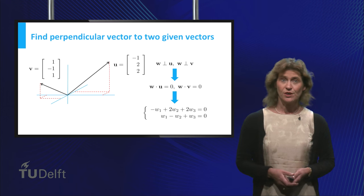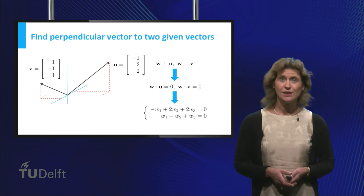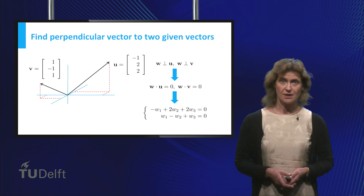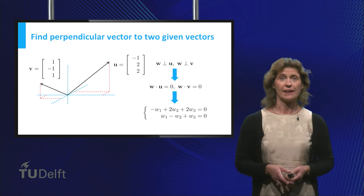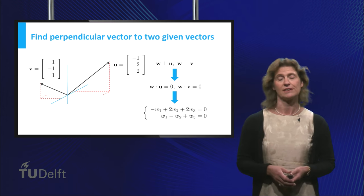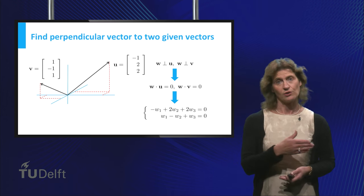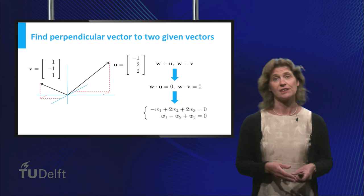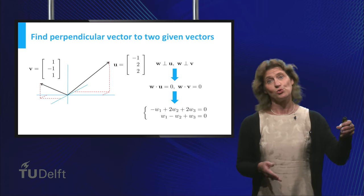Furthermore, you will discover that there are infinitely many solutions, because if you multiply any non-zero vector that is perpendicular to the two given vectors by a non-zero constant, you get another vector that is perpendicular to the two given vectors.